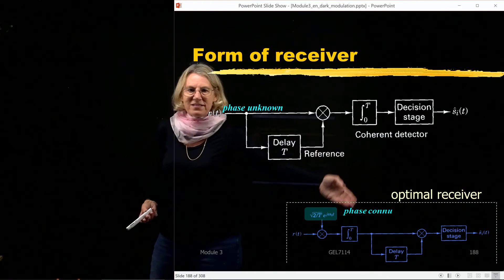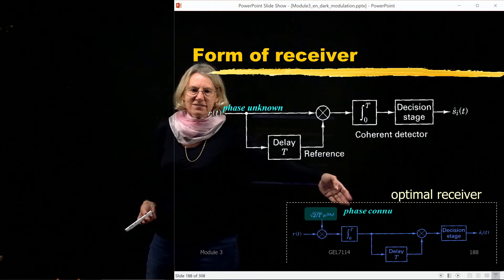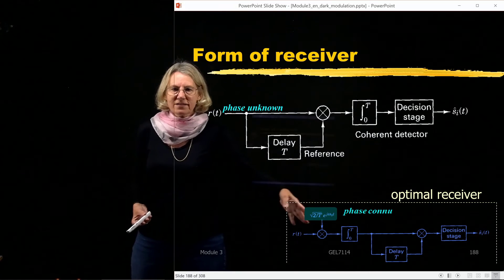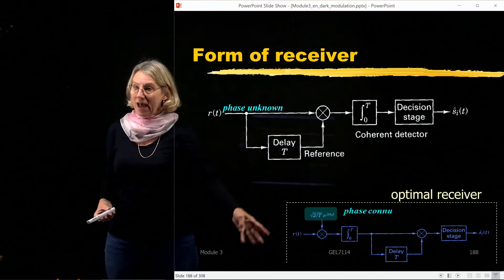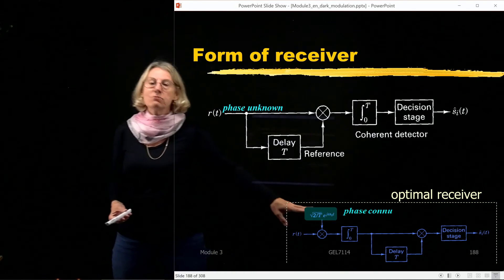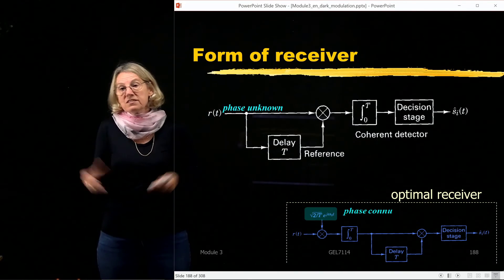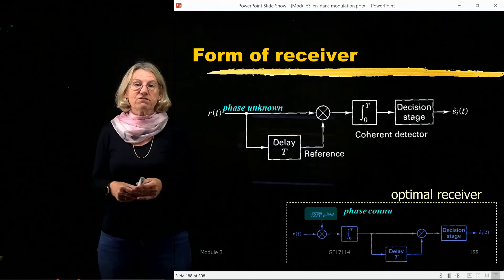But of course I'm not going to do that. That's expensive. I'd have to know the phase, and I'd have to pay for a local oscillator. So this is optimal. It would have better performance, but no way I would use the optimal form. I use the inexpensive form because that's the whole reason I'm doing differential phase shift key.